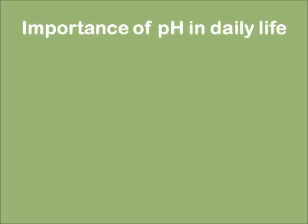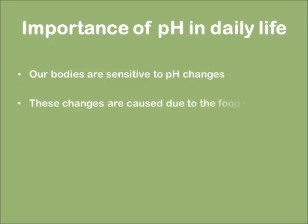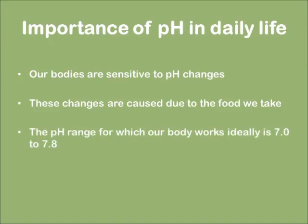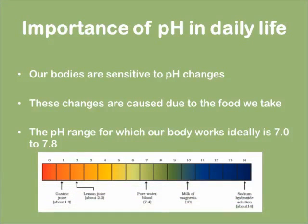Let's learn about the importance of pH in our daily life. Our body is very sensitive to pH changes. These changes are caused due to the food which we eat. The range of pH for which the body works ideally is 7 to 7.8. Given below is the pH values of various foods and substances. Please have a look.